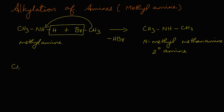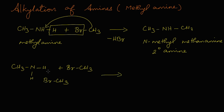Now we are going to react this methylamine with two molecules of methyl bromide — that is, two molecules of CH3Br. What happens is the hydrogen from the amino group and bromine from the methyl bromide leave. In the same way for both molecules, two HBr will be released.